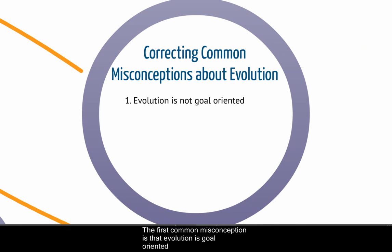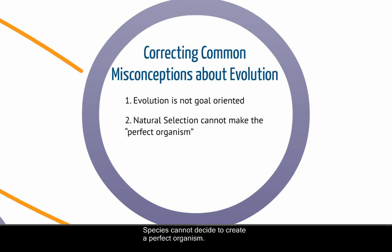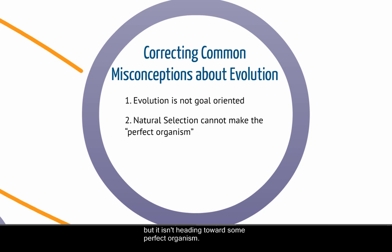The first common misconception is that evolution is goal-oriented. Evolution is not goal-oriented. Instead, evolution is just what happens in terms of gene frequencies to a population every generation. Species cannot decide to create a perfect organism. Natural selection can only act on existing variations in the population, so it can create the best organism given the parts that species has, but it isn't heading towards some perfect organism.